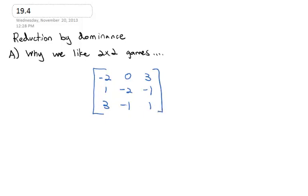Now if this is a strictly determined game, it's not too bad — we just find the worst case scenario for the row player, the worst case for the column player, and that is the optimal strategy for both. For the row player the smallest values are negative 2, negative 2, and negative 1. For the column player the largest values are 3, 0, and 3 — those don't line up, so this is not a pure strategy game. It's a mixed strategy game.